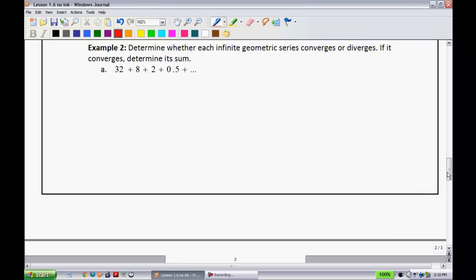We'll investigate some examples here and take a look at this. An easy one to start. Determine whether each infinite geometric series converges or diverges. If it converges, determine its sum. We can easily figure out if it converges or diverges. All you have to do is figure out what R is equal to, and we know how to get R. You just take two terms and divide them. 8 divided by 32 is equal to 1/4 or 0.25. Is that between -1 and 1? Yes. So it converges.